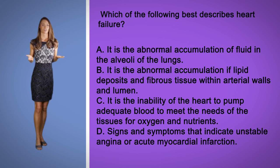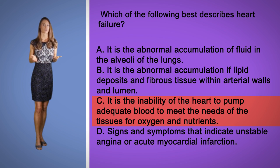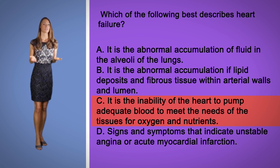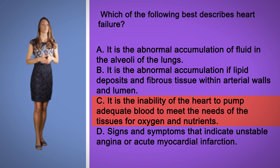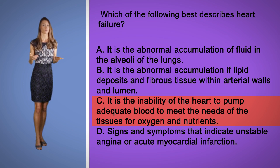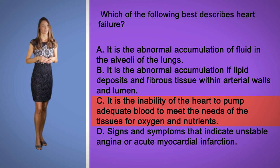The correct answer here is option C. This describes heart failure. It is also described as a clinical syndrome derived from a structural or functional cardiac disorder that impedes the ability of the heart's ventricle to eject or fill with blood. A describes pulmonary edema, which could be a symptom of congestive heart failure but not a description. B describes atherosclerosis, and D describes acute coronary syndrome.